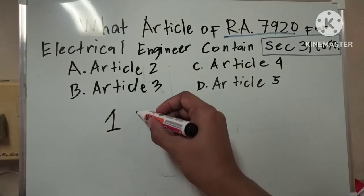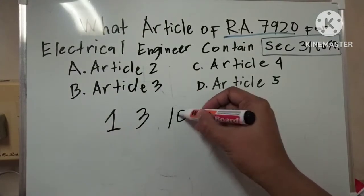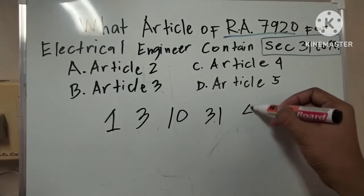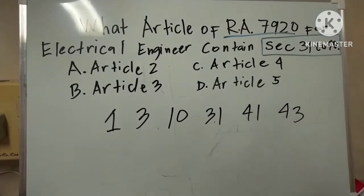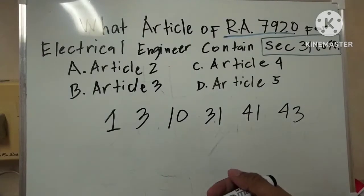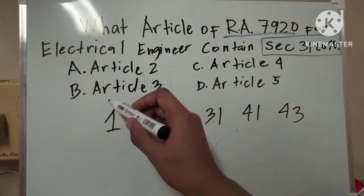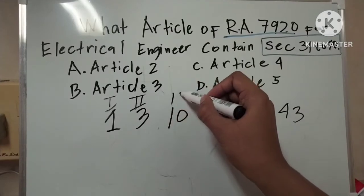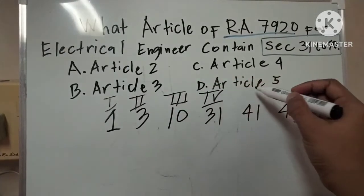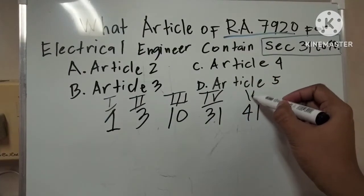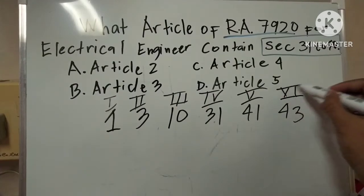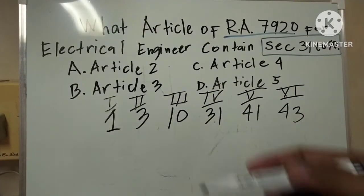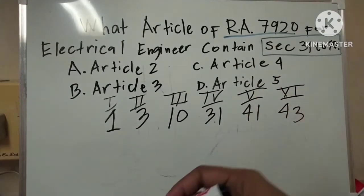1, 3, 10, 31, 41, 43. So itong anim na ito, ito lang yun — meaning nito is Article 1, Article 2, Article 3, Article 4, Article 5, and Article 6. So para madali mo maalala kung anong article sya, ito lang yung tatandaan mo.